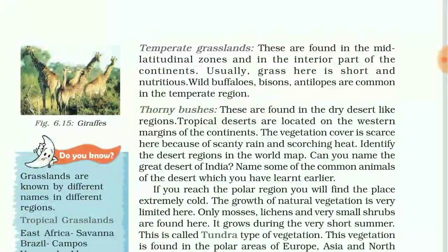Temperate grasslands are found in the mid-latitude zone and in the interior of the continent. Usually the grass is short and nutritious. Wild buffalo, bison, and antelope are common animals of the temperate grassland region.